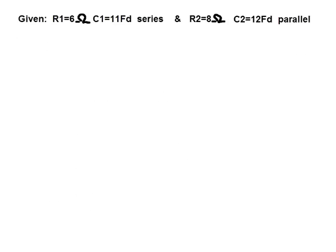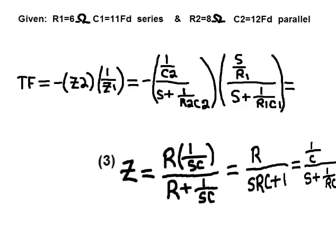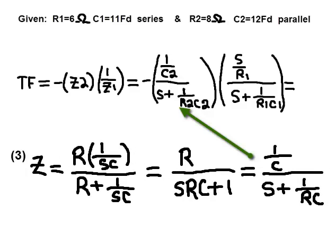Given R1 and C1 in series, given R2 and C2 in parallel, calculate the transfer function negative Z2 times 1 over Z1. Equation 3 can be used for Z2.